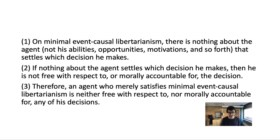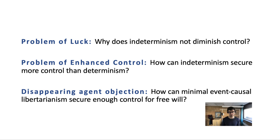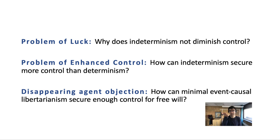The third claim draws out the conclusion from those premises. Franklin points out that the disappearing agent objection is different from both the problem of luck and the problem of enhanced control, because those both involve a comparison between determinism and indeterminism. The problem of luck asks why indeterminism doesn't diminish control, and the problem of enhanced control asks how indeterminism can actually enhance control. The disappearing agent objection, by contrast, doesn't involve that comparison.